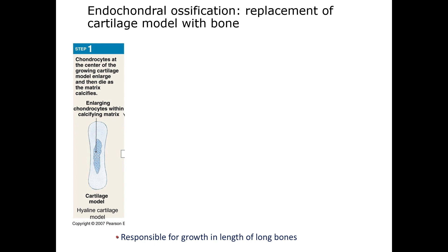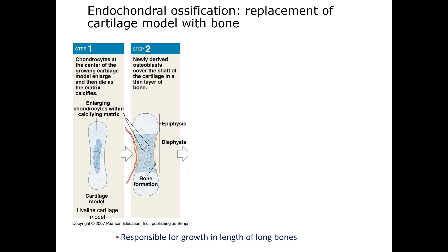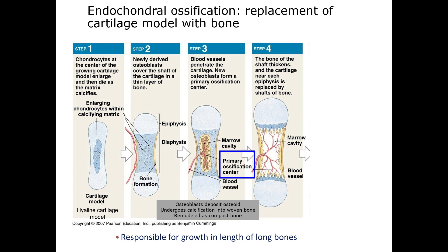Endochondral ossification requires the elaboration of a cartilage model in condensed mesenchyme, a model that is replaced by bone. Once the bone collar is formed by intramembranous ossification, the underlying chondrocytes are programmed to hypertrophy, deposit calcium phosphate into the matrix, and then die. Osteoblasts cover the shaft in a thin layer of bone, blood vessels penetrate the bone collar through osteoclast activity, and osteoprogenitor cells enter. They produce osteoblasts which deposit osteoid on the calcified cartilage matrix, creating primary bone at the primary ossification center. Bones expand in width by appositional growth, while osteoclasts remove bone from the inside to maintain the marrow space — this combination of addition and subtraction, or making and taking, is called modeling.